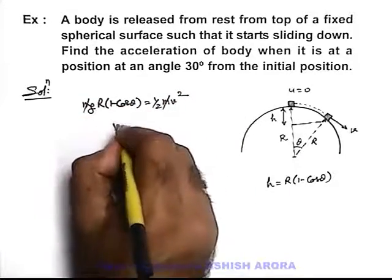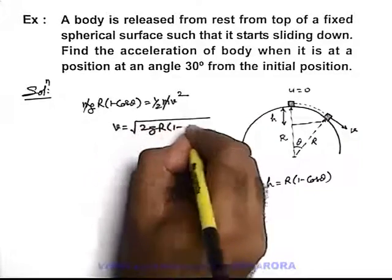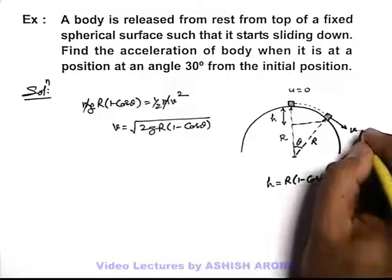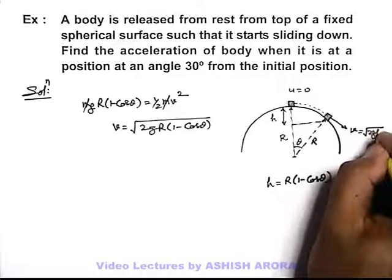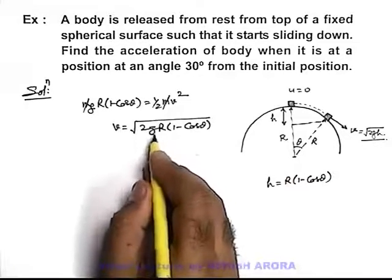Here m gets cancelled out and the speed we will get as root of 2gr(1 - cos theta). This we can get directly by writing v equals root of 2gh by energy conservation. We will directly get this equation.